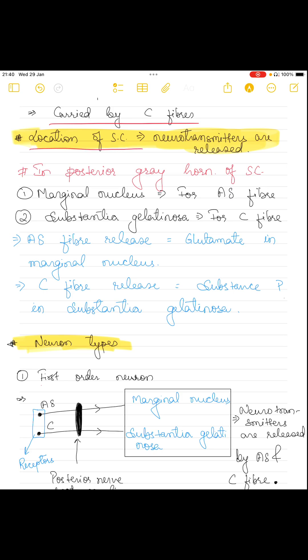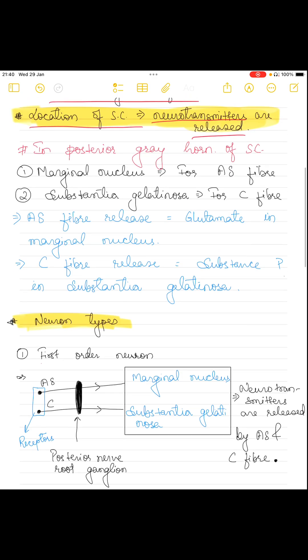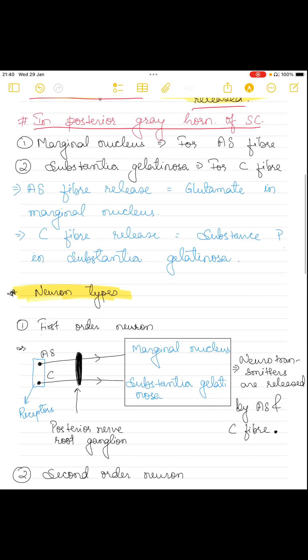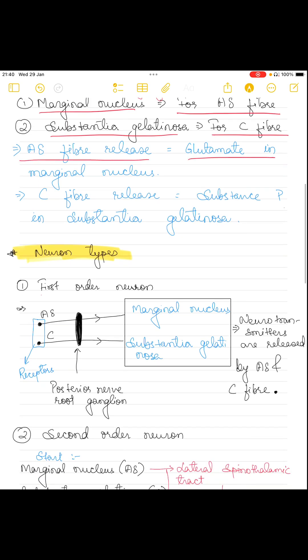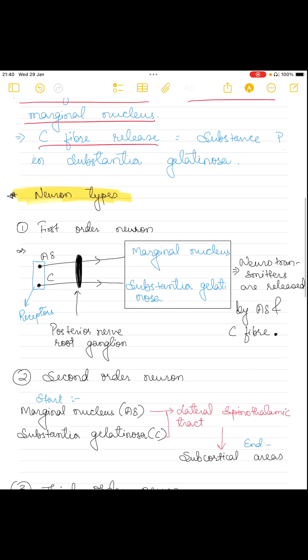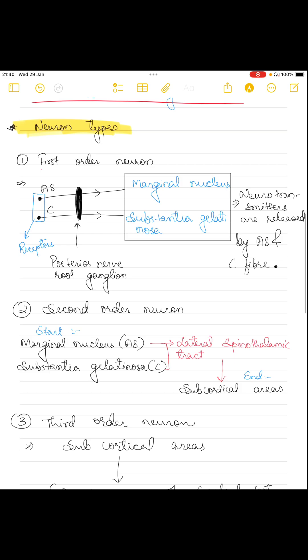Now let's talk about the location in the spinal cord where the neurotransmitters are released. The location is the posterior gray horn of the spinal cord. For A-delta fiber, it's the marginal nucleus, and for C fiber, it's the substantia gelatinosa. A-delta fiber releases glutamate in the marginal nucleus, and C fiber releases substance P in the substantia gelatinosa.